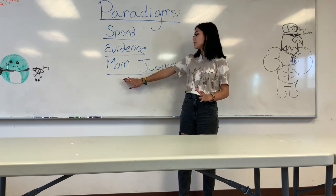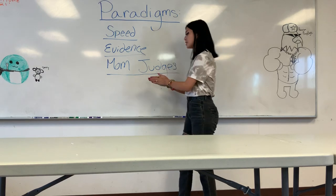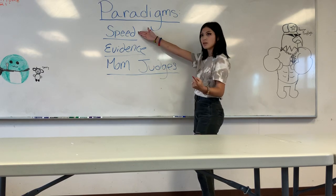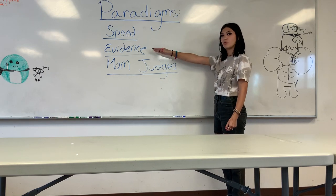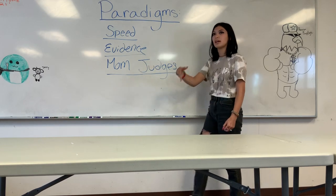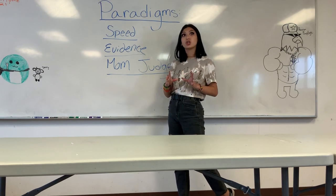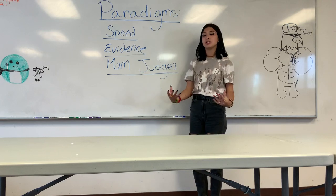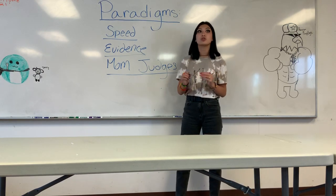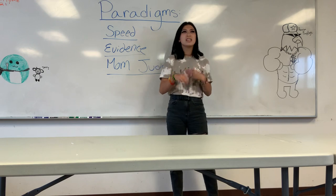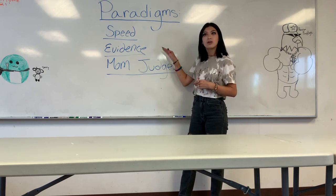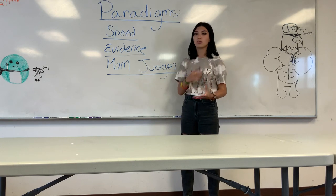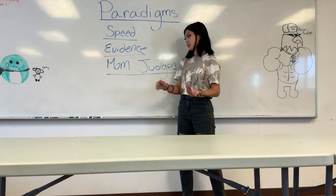Mom judges are different in that you need to make sure that you're speaking clearly and slowly, that you have evidence, and that you have your written out impact under it, so that it almost sums up the evidence and makes sure that your point is getting across to them. During your speeches, keep them simple. Don't try to go for something super advanced and intricate. State the facts of why your case is better than your opponent's and why it overall covers the topic better. That's what you should do for mom judges.